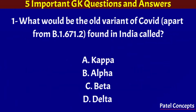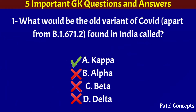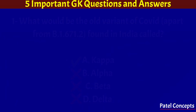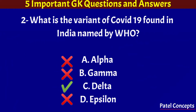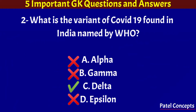What would be the old variant of COVID found in India called? Kappa. What is the variant of COVID-19 found in India named by the World Health Organization? Delta.